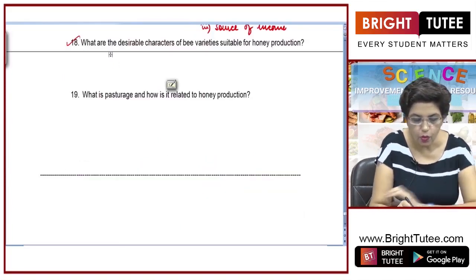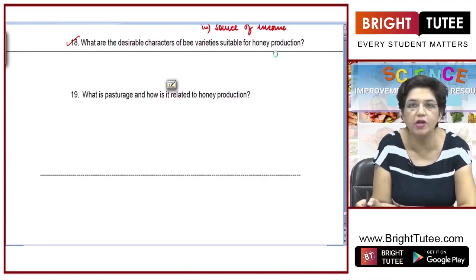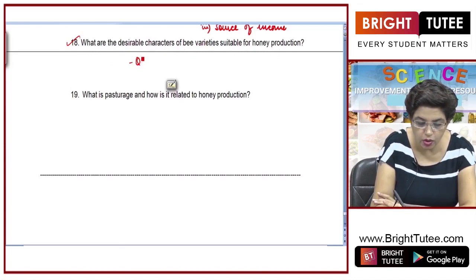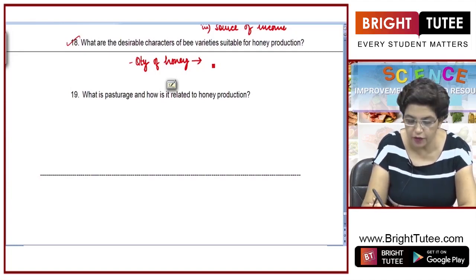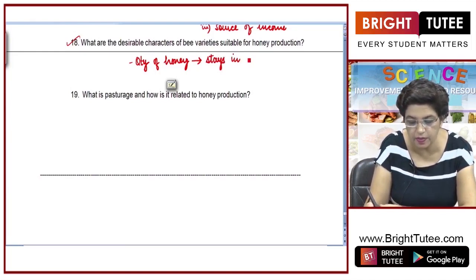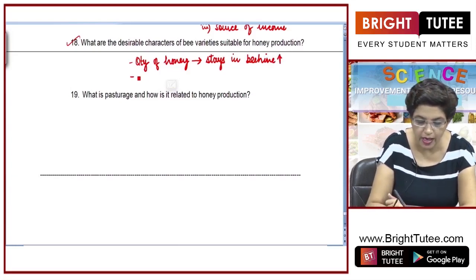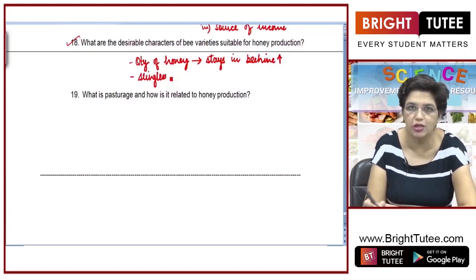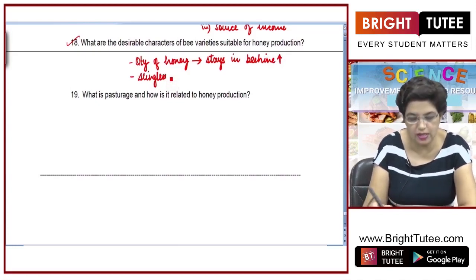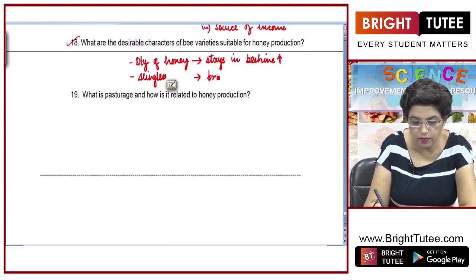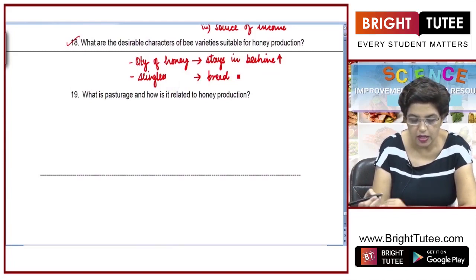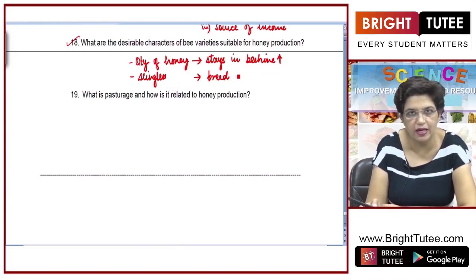Next question: what are the desirable characteristics of bee varieties suitable for honey production? First, the quantity of honey produced in a bee hive — if bees stay in the hive for a longer duration of time, the quantity will improve. Second, they should sting less or not sting at all. Third, they should breed well and the rate of reproduction should be fast. These are the desirable characteristics of the bee variety.